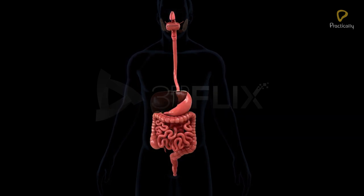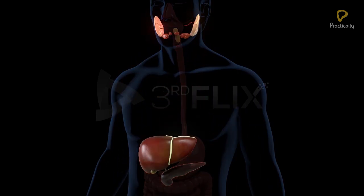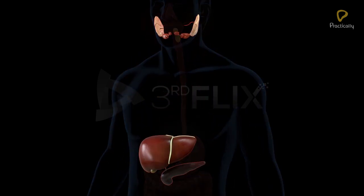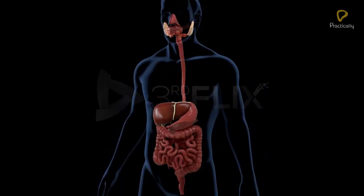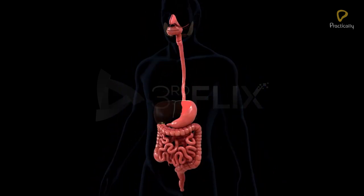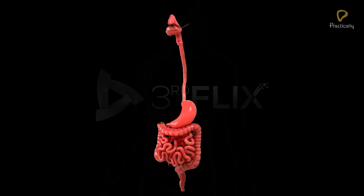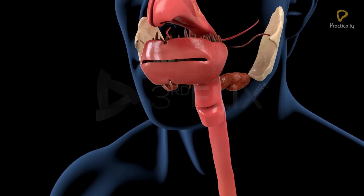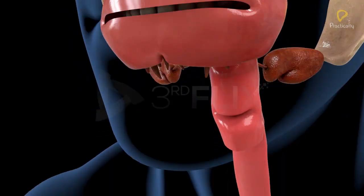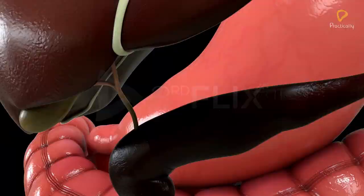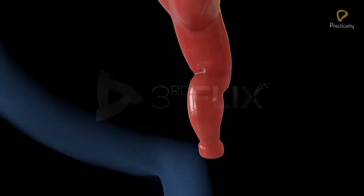The human digestive system consists of the alimentary canal and digestive glands. The alimentary canal, or gastrointestinal tract, is a long, coiled muscular tube extending between the mouth and the anus.